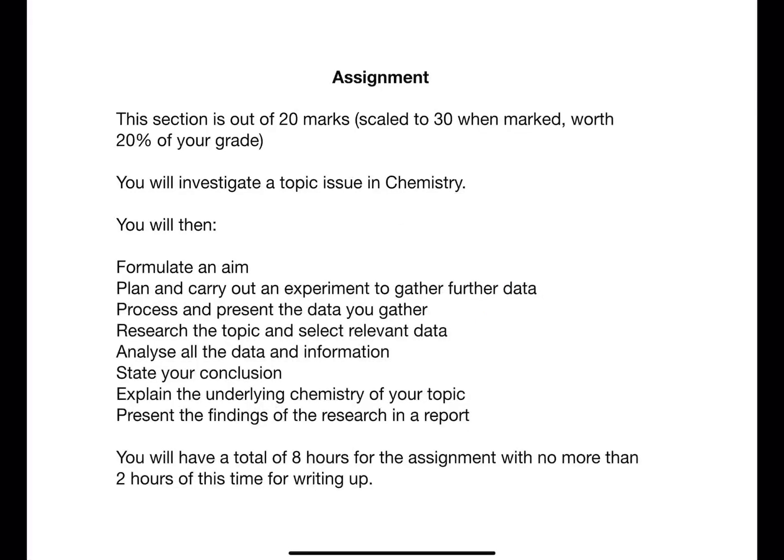Like National 5 you have an assignment which is carried out in class and is worth 20% of your grade. There's a total of eight hours for your assignment, two hours of which is dedicated to writing your final report. You'll be given a selection of topics to choose from. You will need to formulate an aim for your assignment and then plan and carry out an experiment to gather your data. Your experiment can be carried out in a group if necessary but you must take an active part. You need to research background chemistry for your topic and find a second source of data to compare to. Once you have your experimental data, second source of data and some background information you'll be able to write a report to present your findings.